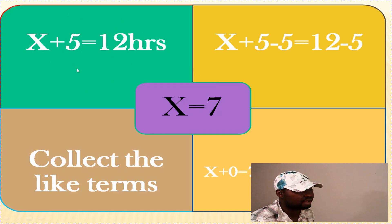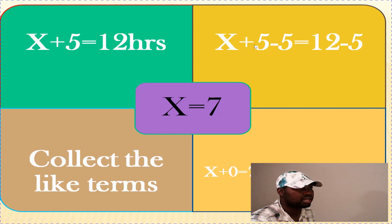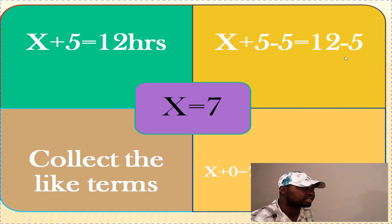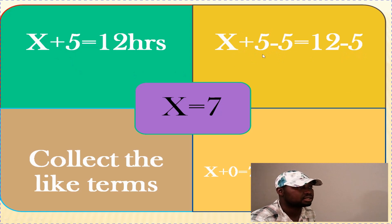To shift the five to the right side, we do the opposite sign. Here we have positive five, and the opposite of positive five is negative five. That's why we subtract five from the left-hand side. And remember, whatever we do to the left side, we have to do to the right side. So we subtract five from both sides: x plus five minus five equals twelve minus five.